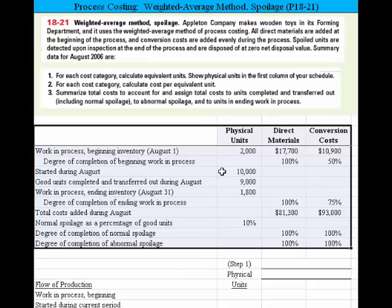First, for each cost category, calculate equivalent units and show physical units in the first column of your schedule. Requirement two: calculate the cost per equivalent unit. Requirement three: summarize the cost and assign those costs to units completed and transferred out, including normal spoilage, to abnormal spoilage, and to units in ending work in process.